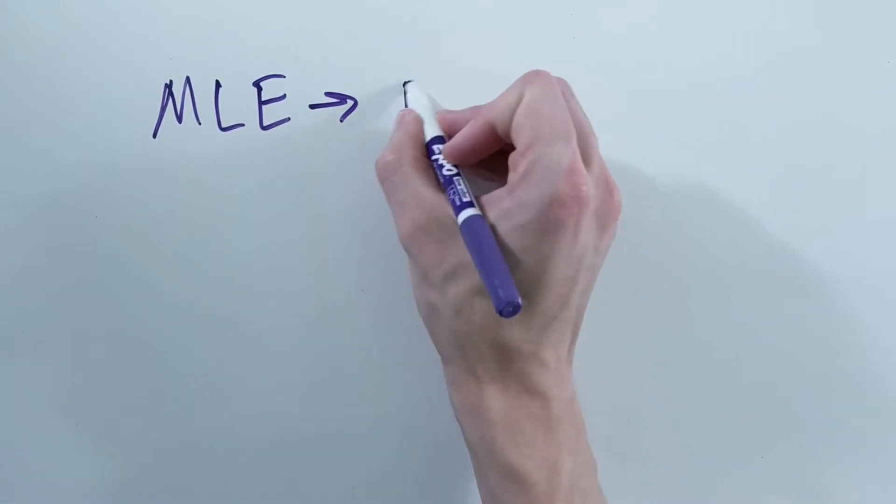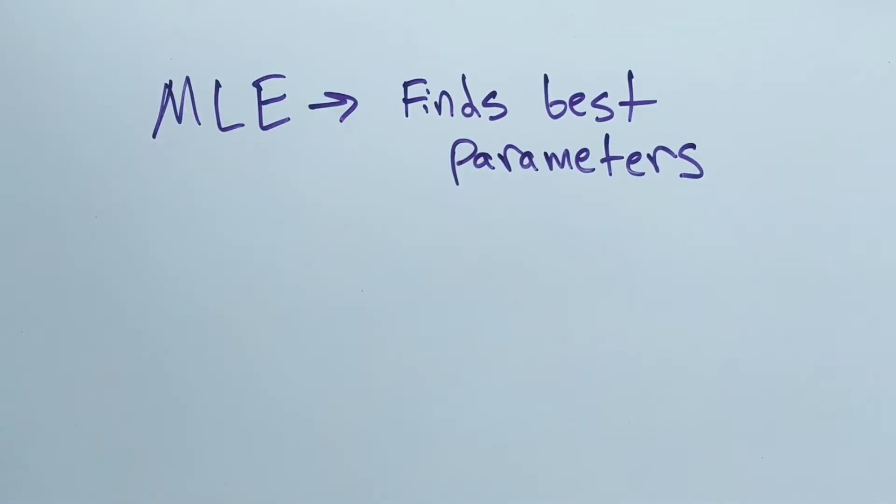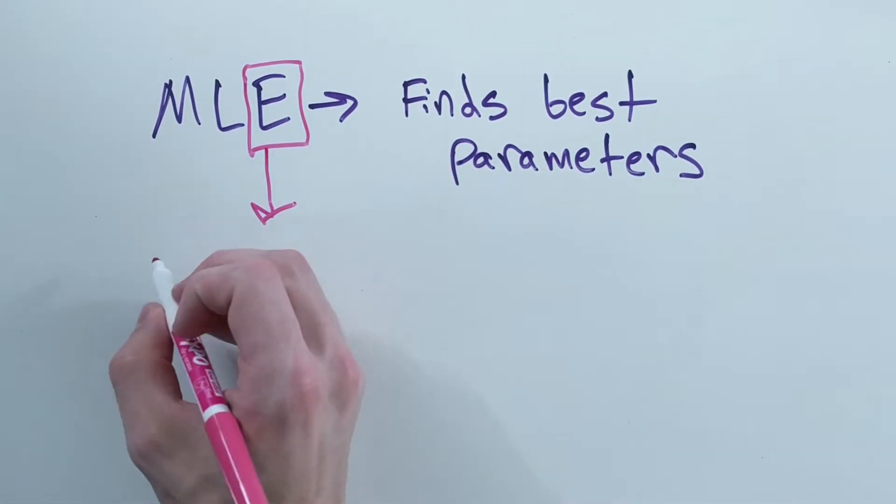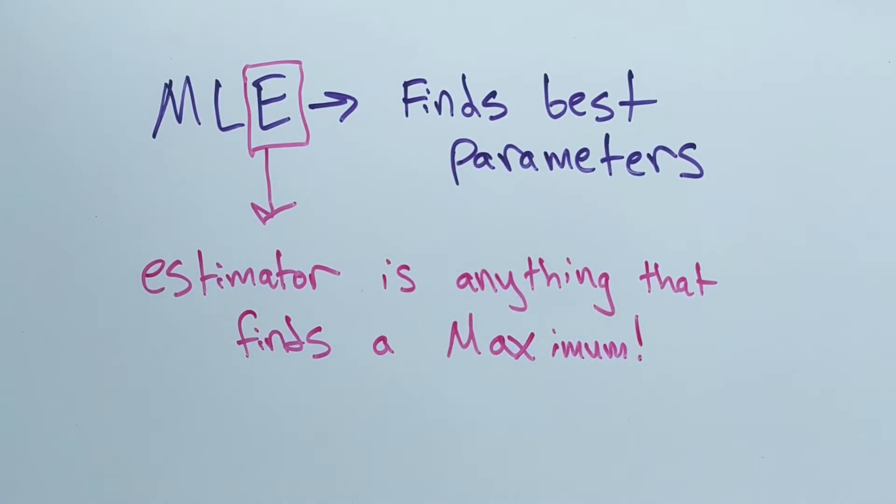Maximum likelihood estimation is a way of determining the parameters for a model that best fits the data given. In general the estimator can be anything that can find the maximum of the likelihood function. This often involves taking the derivative, but there are lots of different methods used to make estimations of maximums.